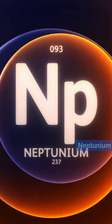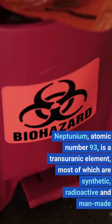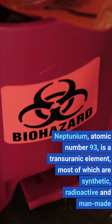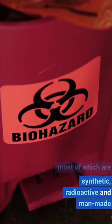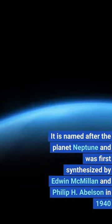Snackable Fact, Neptunium. Neptunium, atomic number 93, is a transuranic element, most of which are synthetic, radioactive and man-made. It is named after the planet Neptune and was first synthesized by Edwin McMillan and Philip H. Abelson in 1940.